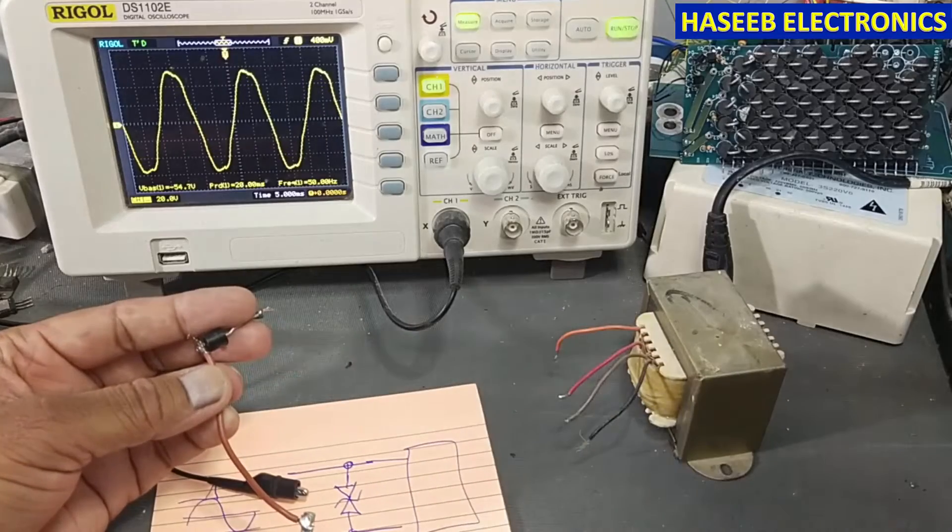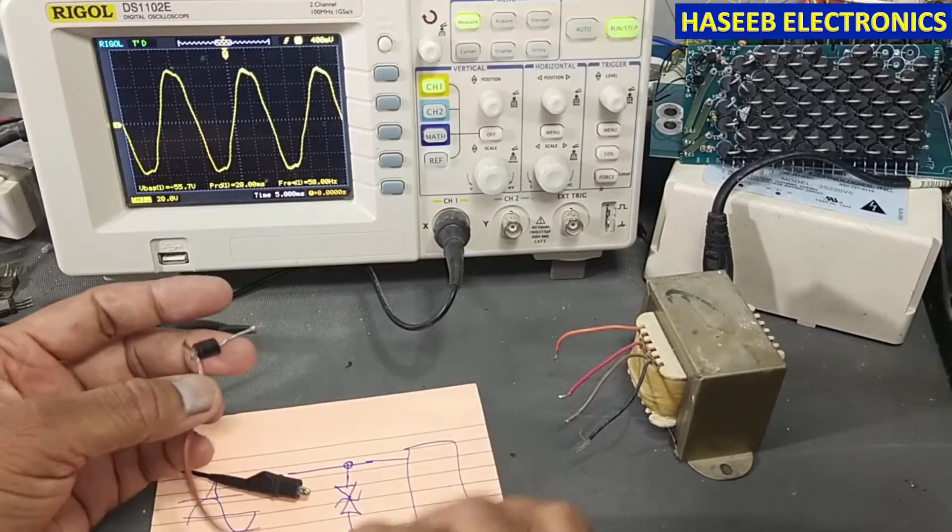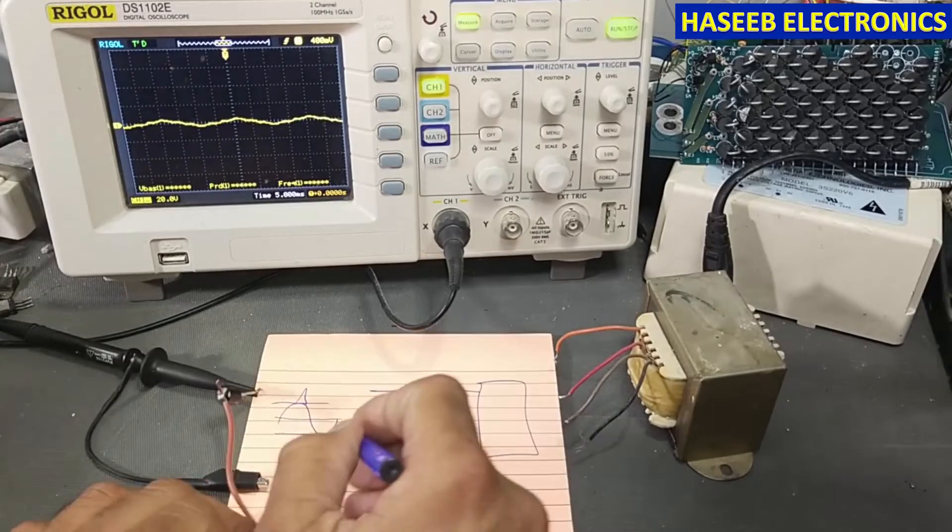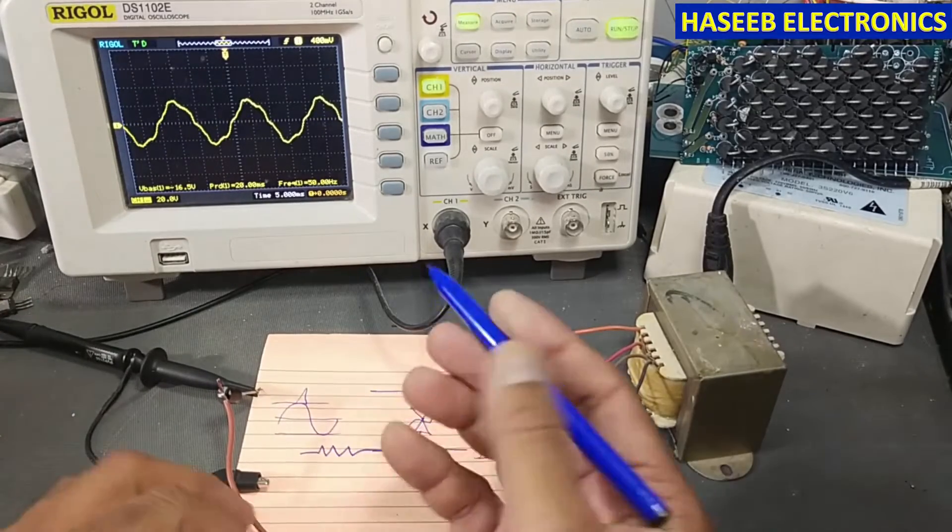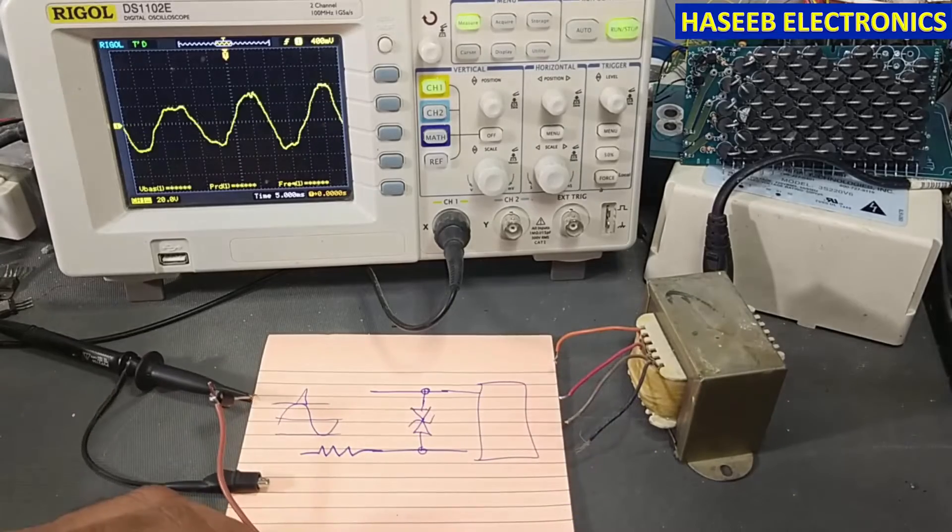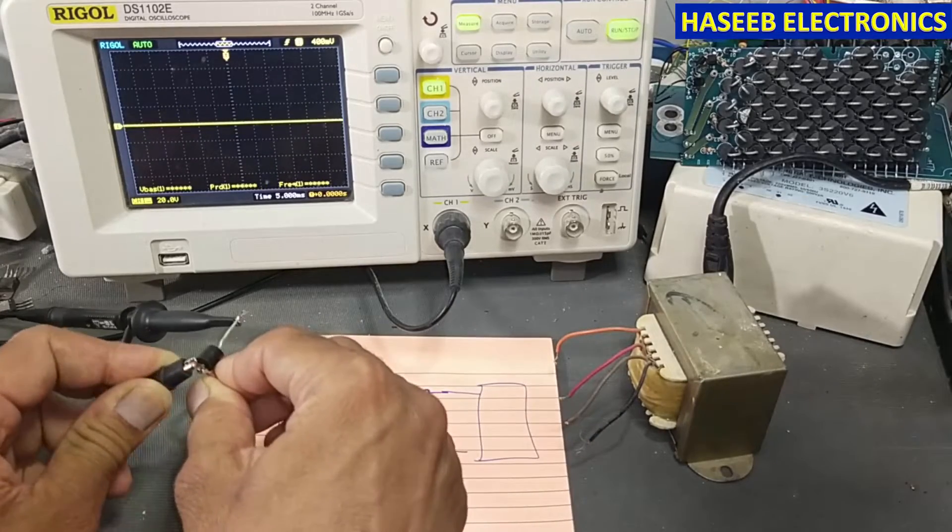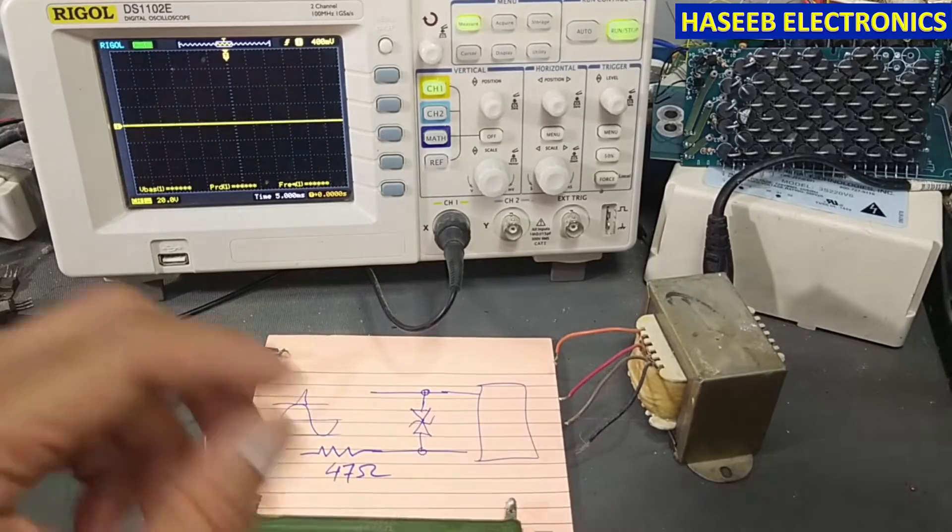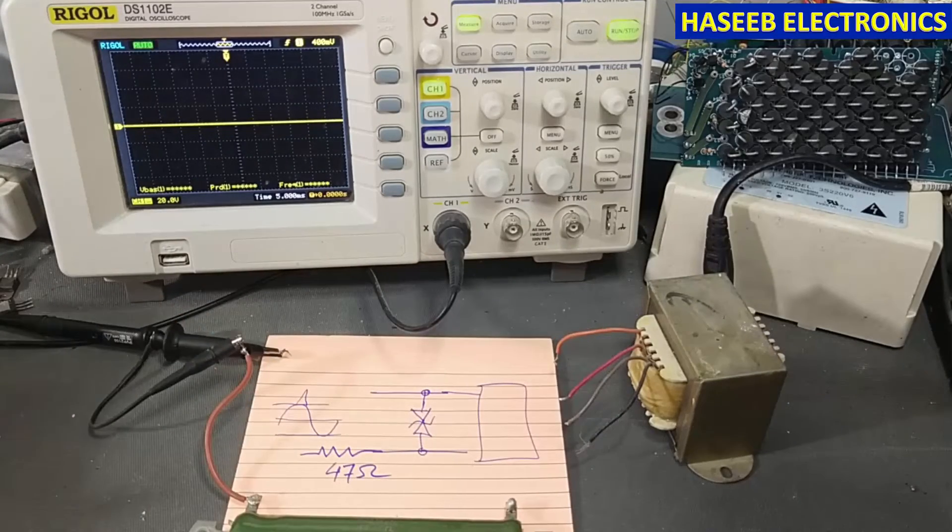We will measure the voltage across this TVS. I will use a series resistor of 47 ohms in one line. We will monitor voltage across this TVS, and now I will apply this voltage.